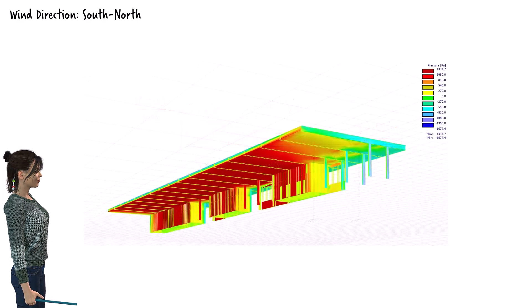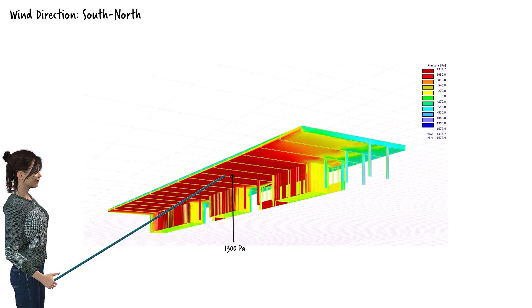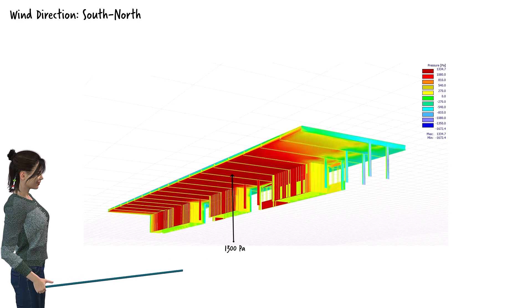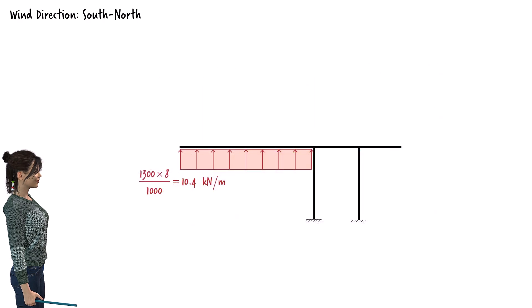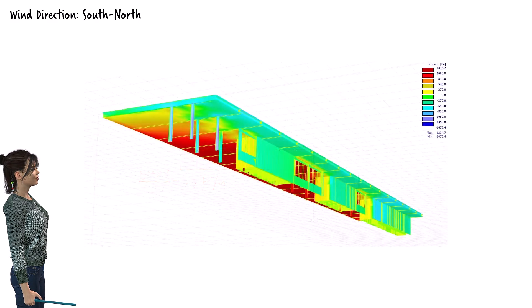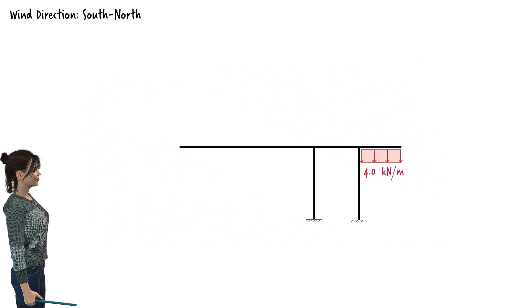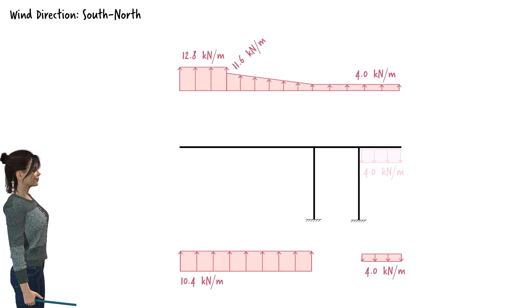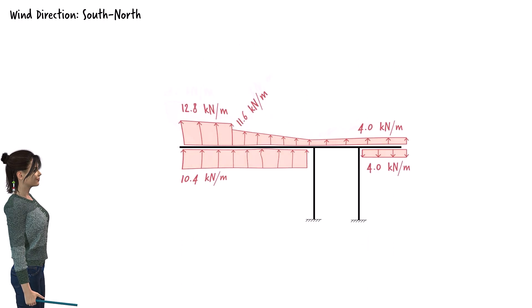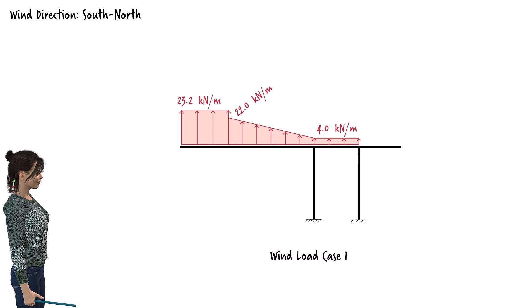On the bottom surface of the canopy, the wind produces a uniform pressure profile on the south side. The magnitude of this positive pressure near the center of the canopy is 1300 pascals. When multiplied by 8 meters, this results in an upward distributed load of 10.4 kN/m on the long cantilever part of the frame. On the north side, the average wind pressure on the bottom surface is negative 500 pascals — a suction pressure. Multiplying 500 by 8 meters, we get a downward uniformly distributed load of 4 kN/m acting on the short cantilever beam of the frame. The cumulative distributed load acting on the frame under this loading scenario defines what we call wind load case 1.